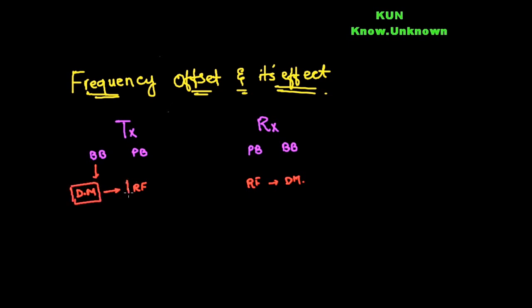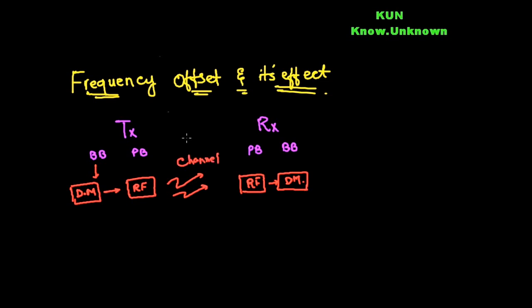Let me label the Tx, Rx, and the part in between as the channel. For our discussion, we are going to take an AWGN channel only, which should not impact your understanding of the frequency offset. I have taken AWGN to be realistic when we introduce the frequency offset, but if you don't want AWGN, that's fine too.